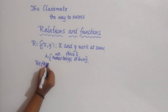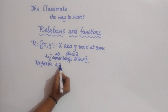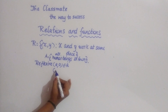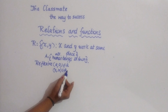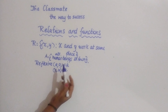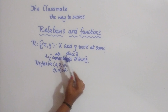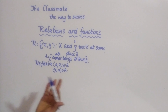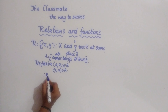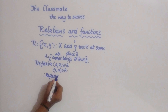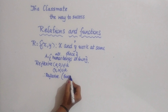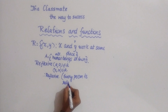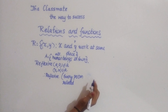For the first condition — reflexive — if (a, a) belongs to R then it is reflexive. Similarly here, (x, x) should belong to R. Since x and y work at the same place, instead of y I write x itself, so x and x work in the same place. Hence it is reflexive.